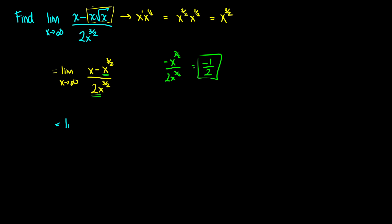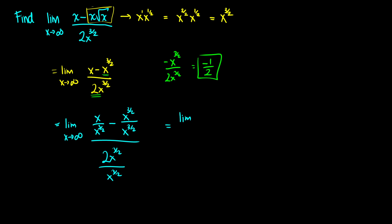What we're going to do is divide every single term by the highest power in either the numerator or the denominator, which in this case is x to the 3 halves. This gives us x over x to the 3 halves, minus x to the 3 halves over x to the 3 halves, all divided by 2x to the 3 halves over x to the 3 halves. This simplifies to the limit as x approaches infinity of 1 over x to the 1 half minus 1, because x to the 3 halves over x to the 3 halves cancels, and the denominator becomes just 2.